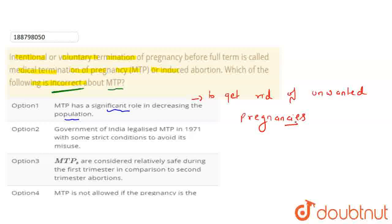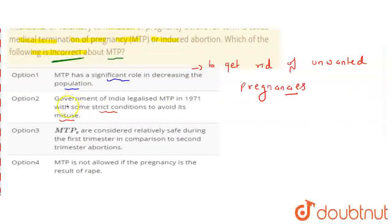Unwanted pregnancy is used to get rid of — either due to unprotected intercourse, or failure of the contraceptive used, or rapes. So here we have a second statement: the Government of India legalized MTP in 1971 with some strict conditions to avoid its misuse. This is our right statement. We have to choose our second statement.